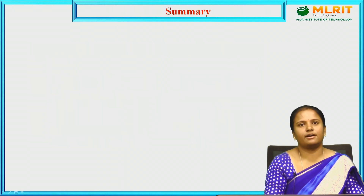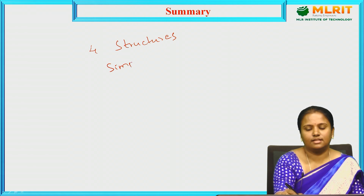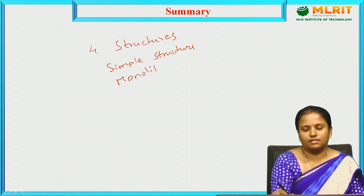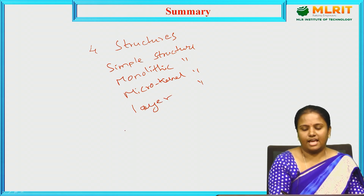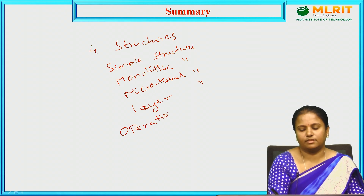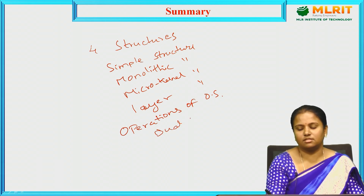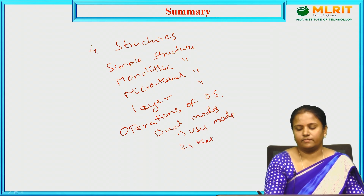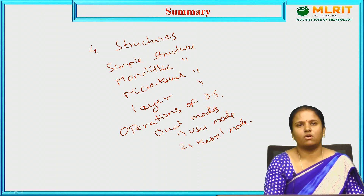Today's session covered four OS structures: simple structure, monolithic structure, micro kernel structure, and layered structure. We also discussed operating system operations — specifically dual mode operations — covering user mode and kernel mode. If you have any doubts, you can comment in the comment box. Thank you.